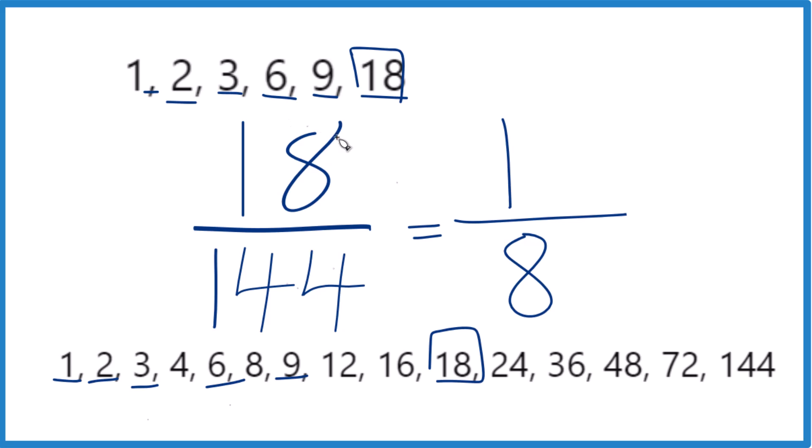So when we simplify the fraction 18 144ths, we get 1 eighth. We can't reduce 1 eighth any further. These are equivalent fractions. They have the same value. It's just that we've simplified or reduced 18 over 144 down to 1 eighth.